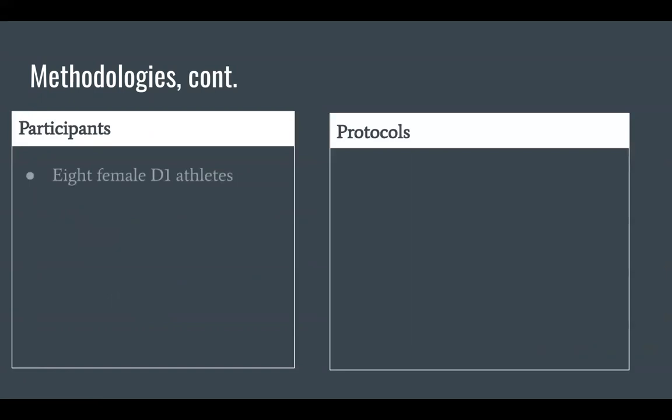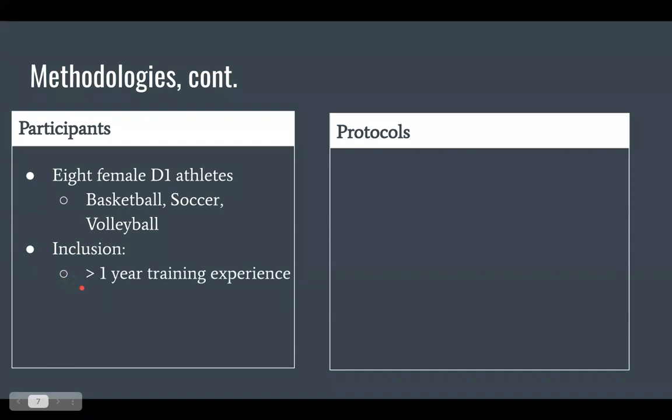For the participants, we had eight female Division I athletes that participated in either basketball, soccer, or volleyball. The inclusion criteria for the study was that they had to have a minimum of one year training experience in a collegiate sports setting, and second, they had to be cleared for physical activity. And what this is, is a term used by our sports medicine staff, which essentially means that they are fully able to participate in their sport and training, and they're not at risk of injury or re-injury. These athletes went through the protocols in a randomized order.